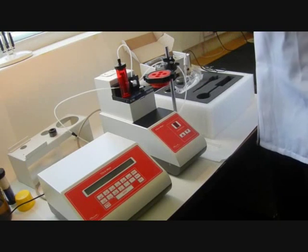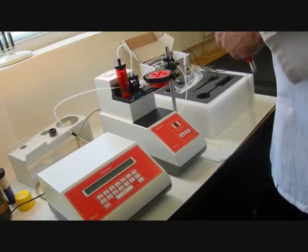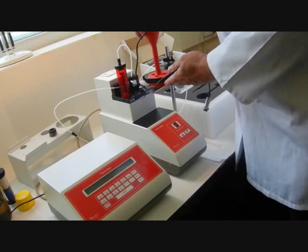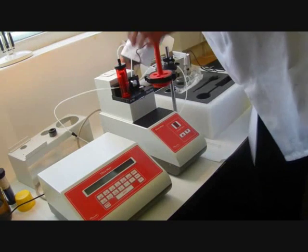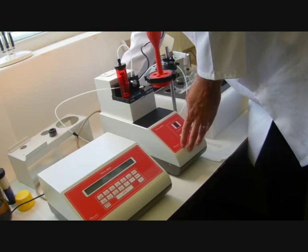Next we can take the stirrer motor and screw that into the top of the titrator head. This plugs in to the base of the titration unit.